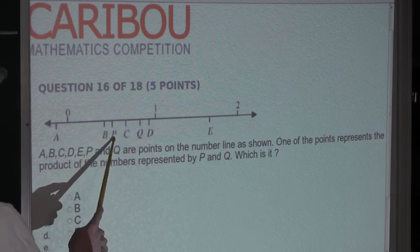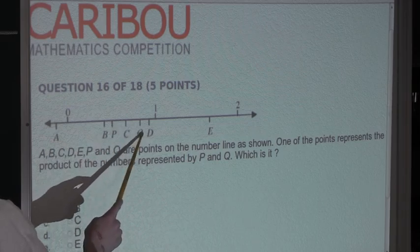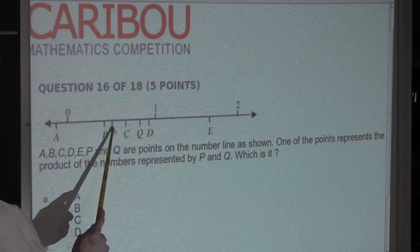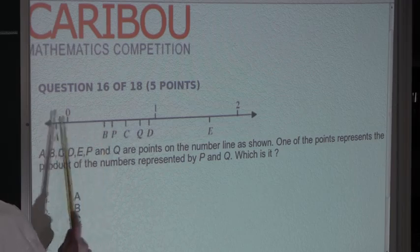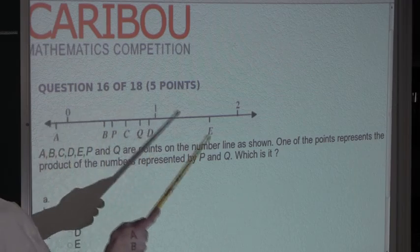So, let's look at P. We know that if we multiplied P by 1, then it would just stay right here. But we're multiplying it by Q, which is less than 1, so it would be less than P. So it would have to be more towards the left of the number line because the number line gets greater from left to right.